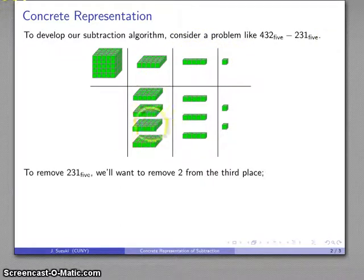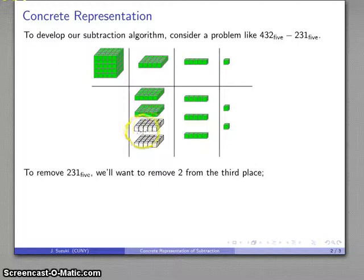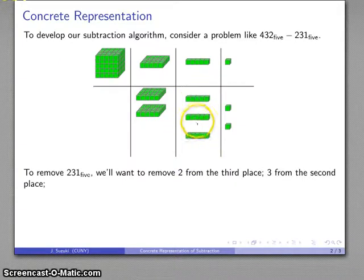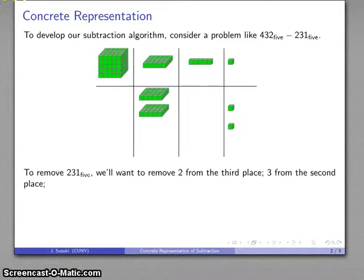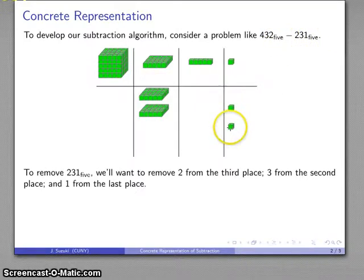So I'll pick out 2 of these to get rid of, and they're gone. I want to take 3 of these, well I'll pick all 3 of these, I want to remove these 3, and they're gone. And then finally, 1 of these, so I'll pick 1 and get rid of it.